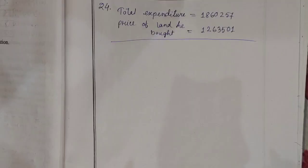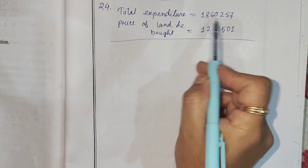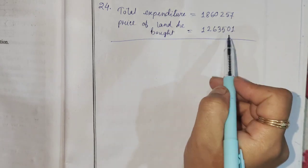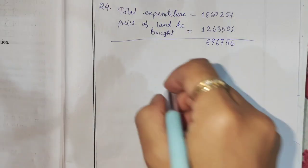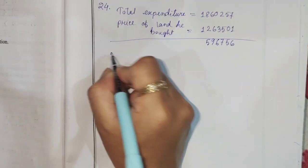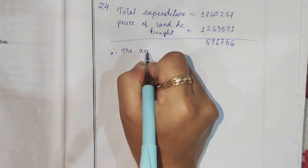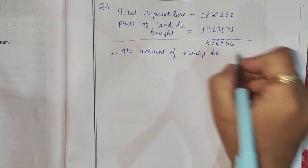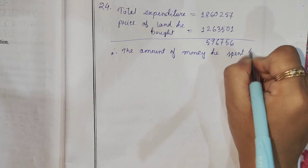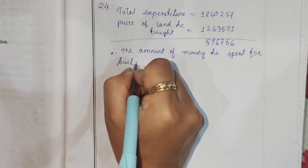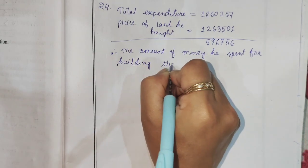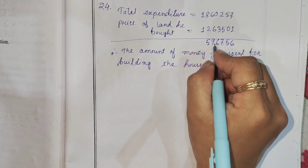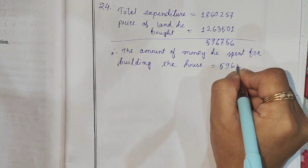So let me work this out. The total of the property is Rs. 18,00,000 and the price of land he bought is given, so we can see how much money he spent. The amount of money he spent for building the house is equal to Rs. 5,96,756.